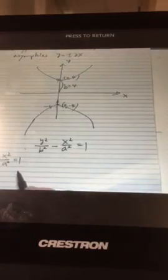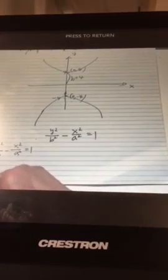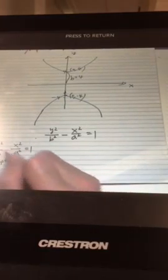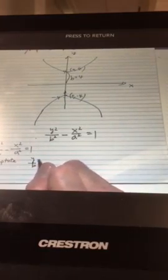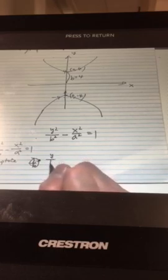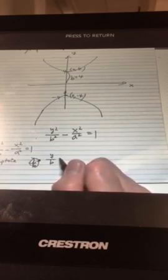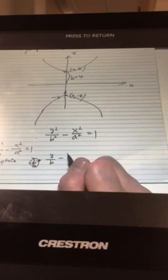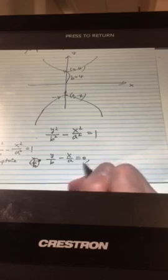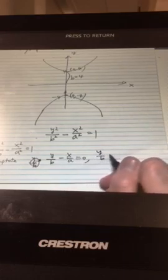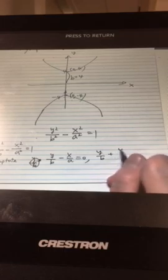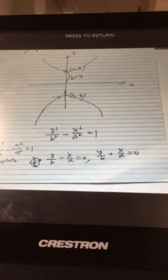Then I have to use asymptote. Now, from what is given, the asymptote is, I just copied this one, y over b minus x over a equal to 0, and y over b plus x over a equal to 0, which is asymptote.